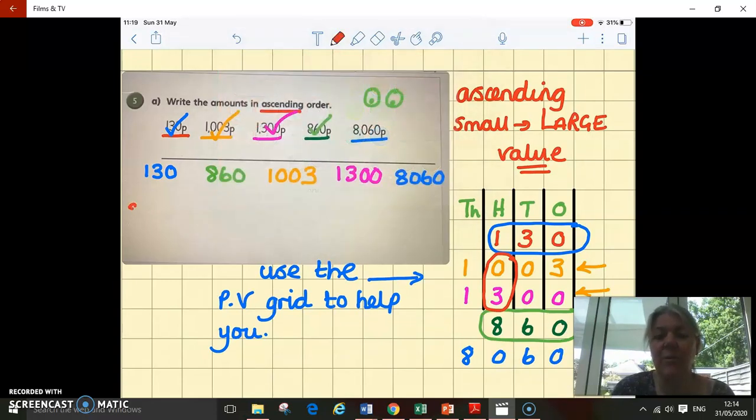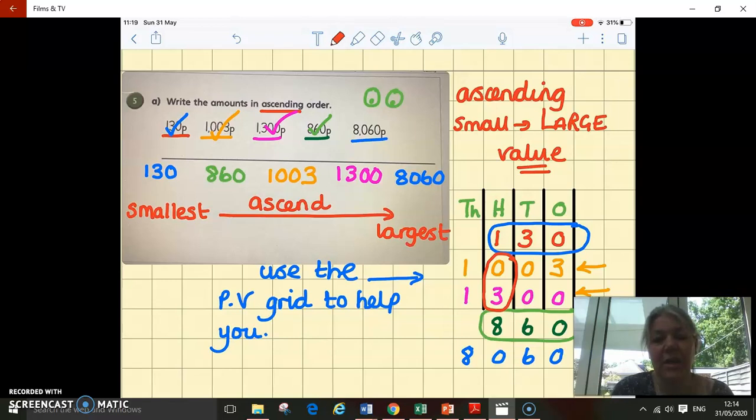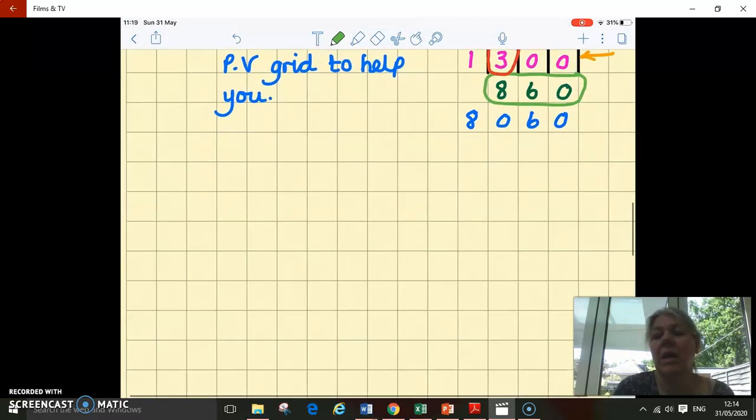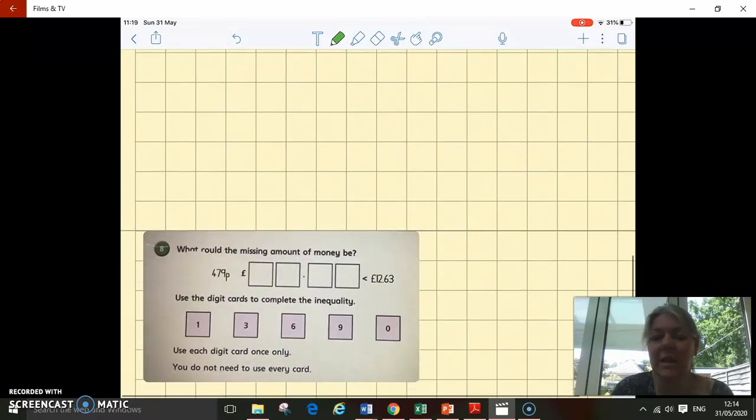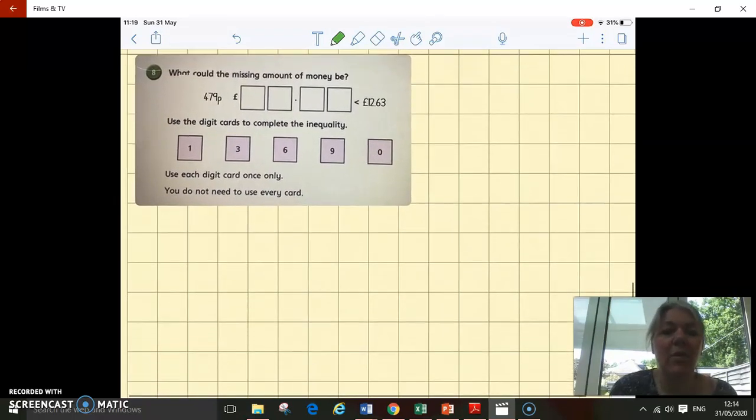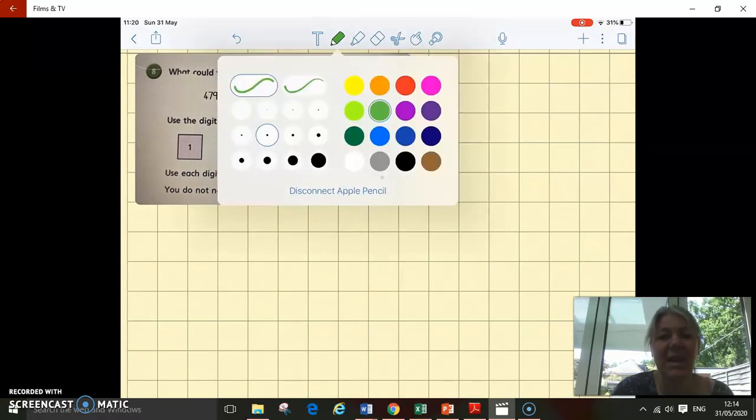I've been a bit naughty there, I've forgotten to put my pence in, so make sure you put those in. So ascending is smallest to largest, and descending is ordering them from largest to smallest. Think about that when you're looking at your questions like that today. Moving on to the last one for this section.